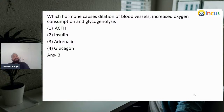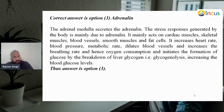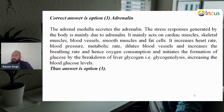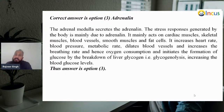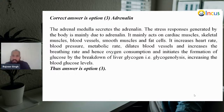Next: which hormone causes dilation of blood vessels, increased oxygen consumption, and glycogenolysis? STH, insulin, adrenaline, or glucagon? Answer: adrenaline. The adrenal medulla secretes adrenaline; the stress response is mainly due to adrenaline, acting on cardiac muscles, skeletal muscles, blood vessels, smooth muscles, and fat cells. It increases heart rate, blood pressure, metabolic rate, dilates blood vessels, increases breathing rate and oxygen consumption, and initiates formation of glucose by breakdown of liver glycogen — glycogenolysis — thereby increasing blood glucose level. Answer: adrenaline.